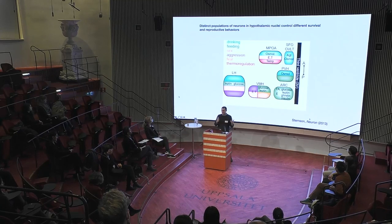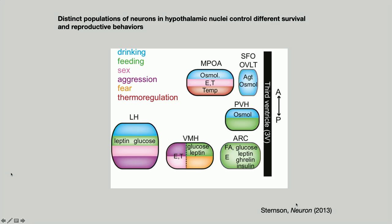Interoceptors — you can think of them as the retina of the body — are particular sets of neurons that look inside the body, detect specific things, and send signals to the rest of the brain that particular behaviors need to be engaged in order to obtain what is needed. It's been found over many years that there are distinct populations of neurons in different parts of the brain that control specific motivated behaviors: drinking, feeding, sex, aggression, fear, and thermoregulation — all evolutionarily hardwired because they are necessary for survival and reproduction.